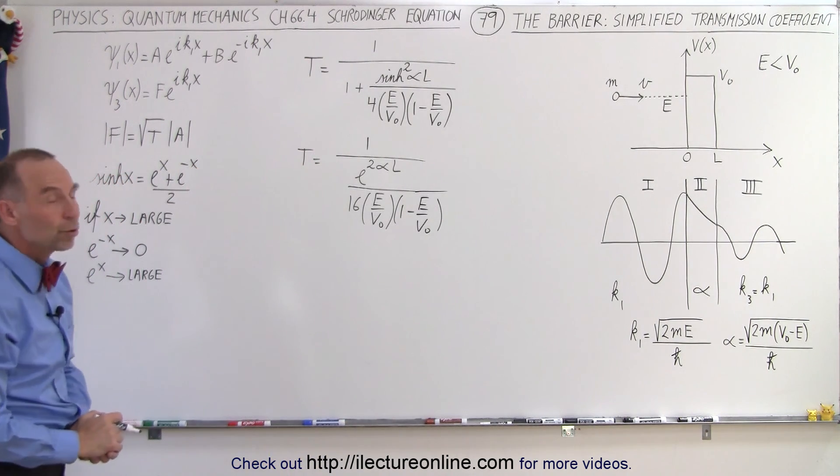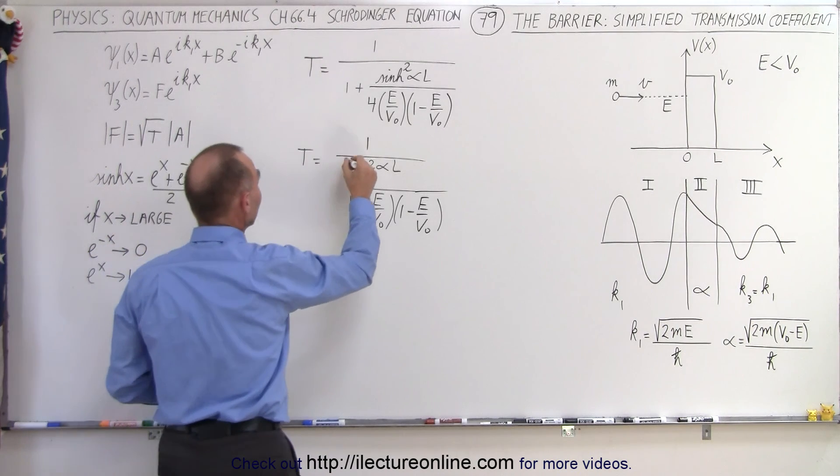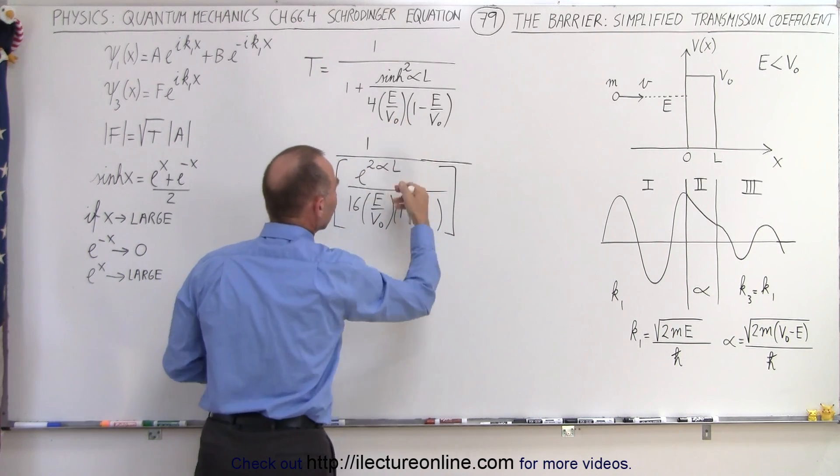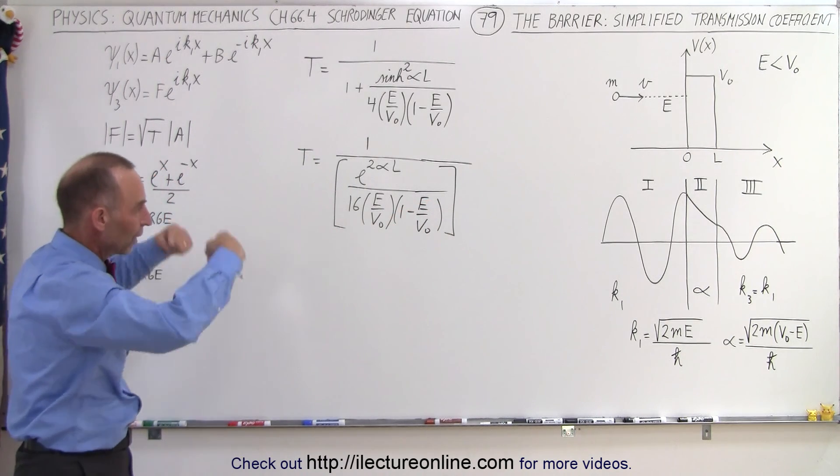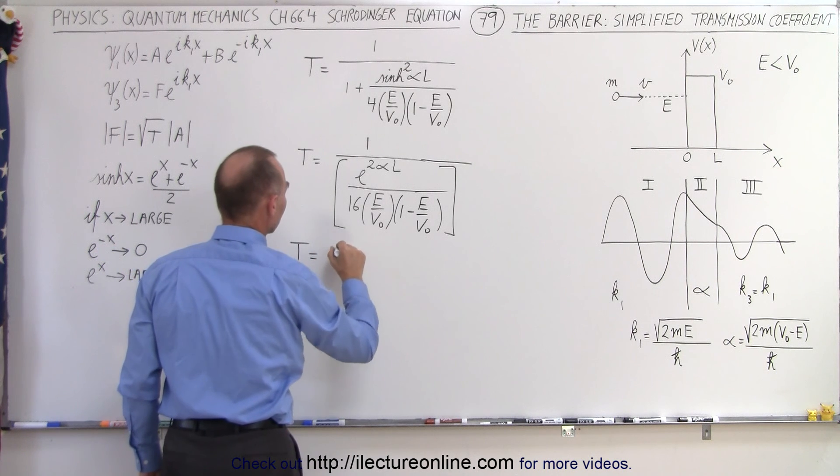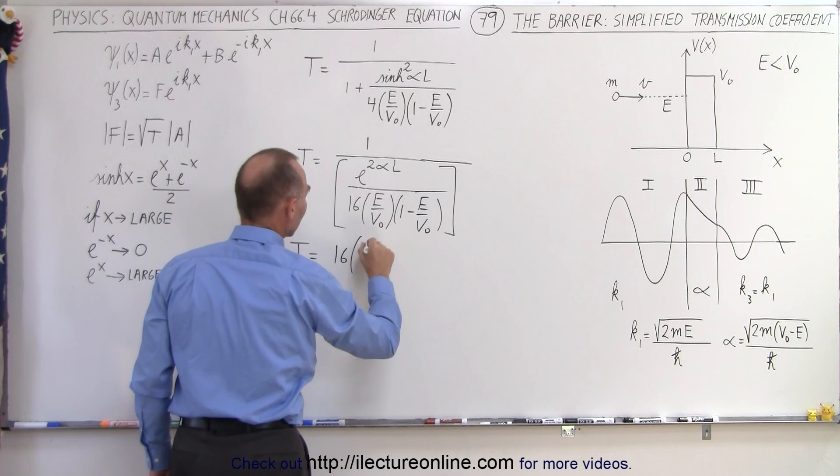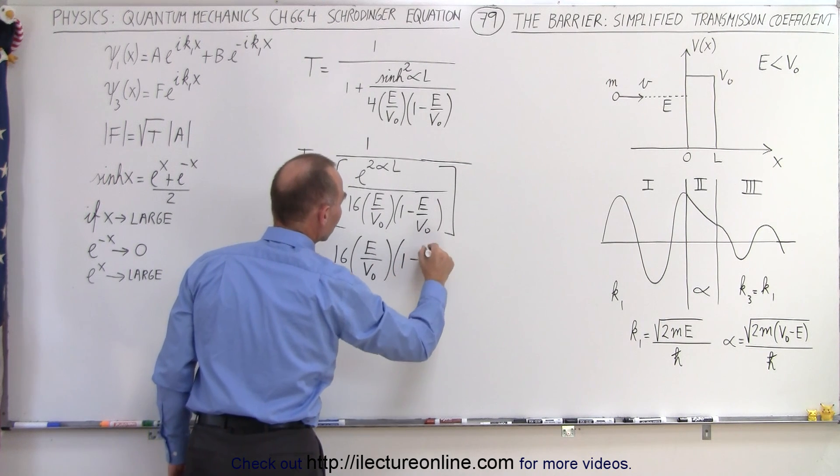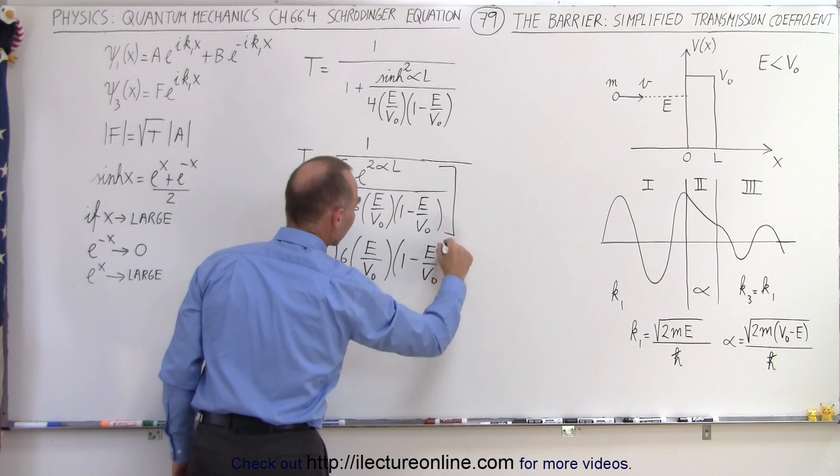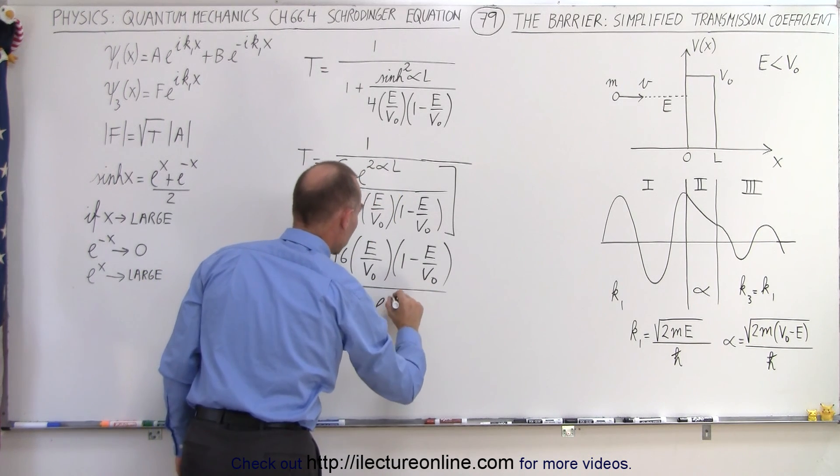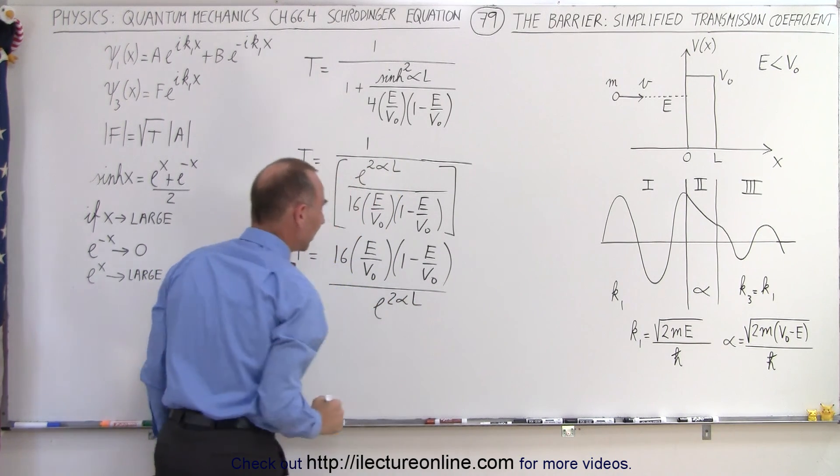Now the next thing we can do is look at the denominator. Essentially, we have 1 divided by this, which is the same as multiplying by its inverse. We can turn that around, and we can say that the transmission coefficient is equal to 16 times E over V naught times 1 minus E over V naught. And then in the denominator, we still have the e to the 2 alpha L.